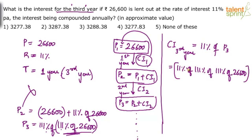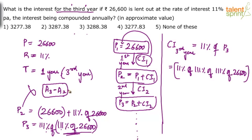There is another method: find the total amount for three years, find the total amount for two years, and subtract to get the interest for the third year. Using the formula P × (1 + r/100)^t — once with t=3 and once with t=2 — and taking the difference. But this is also time-consuming. The simpler approach is 11% of 111% of 111% of 26600.